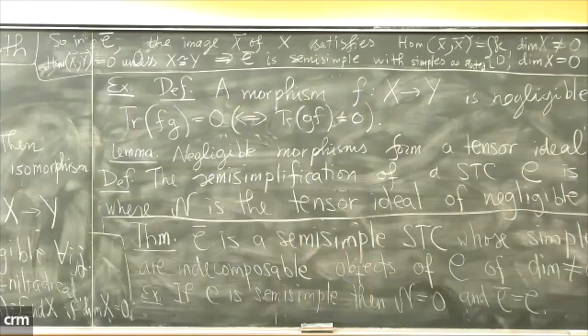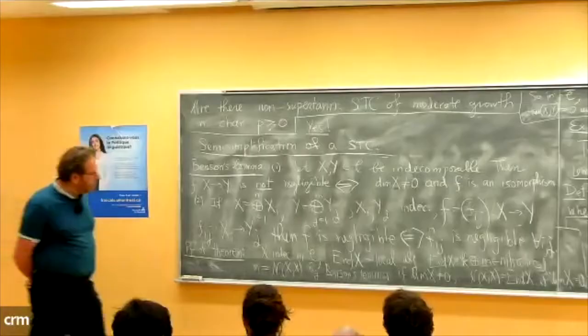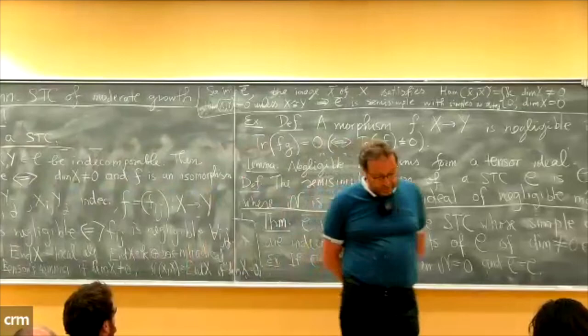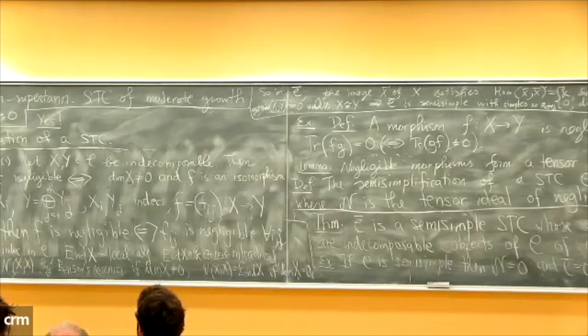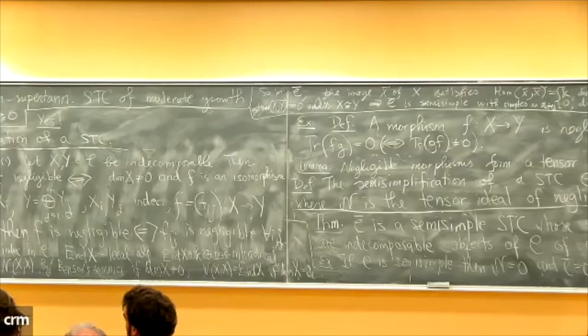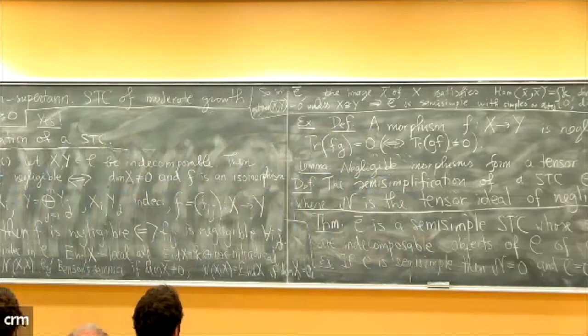After the break, the proof of Benson's lemma will be explained, and then explicit examples of semi-simplifications will be constructed, giving counterexamples to the Tannakian classification in characteristic p. Regarding the framework: by definition, a symmetric tensor category is Artinian (a category of comodules over a coalgebra), and the Krull-Schmidt theorem holds. Benson's lemma also holds for pseudo-tensor categories arising from tensor categories, where the trace of any nilpotent endomorphism is zero, and the whole semi-simplification procedure applies.